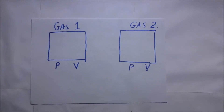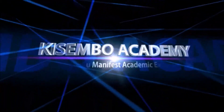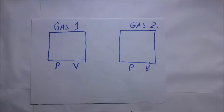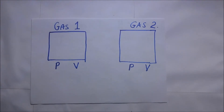In this session I get to derive Avogadro's law from the expression of kinetic pressure. Avogadro's law simply states that equal volumes of all gases at the same temperature and pressure contain the same number of molecules. This law was developed by Avogadro in 1811 and was well established way before the kinetic theory was even developed.